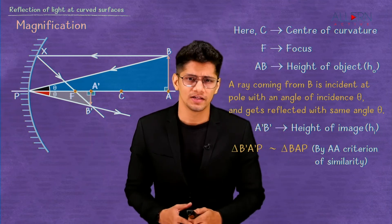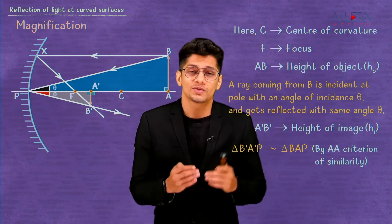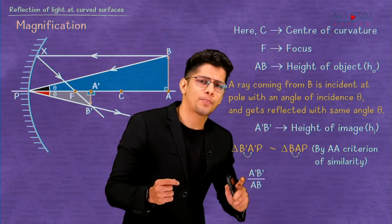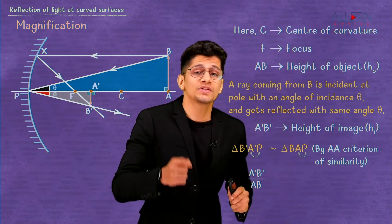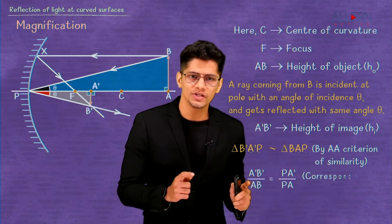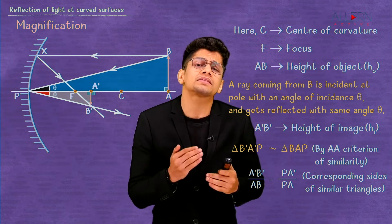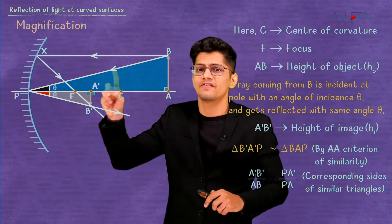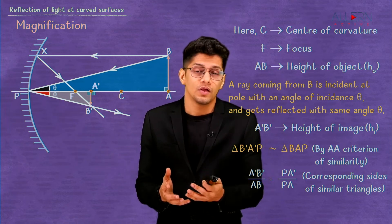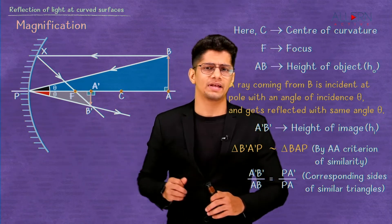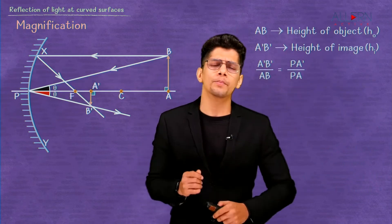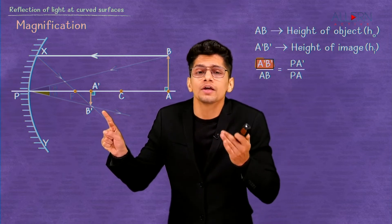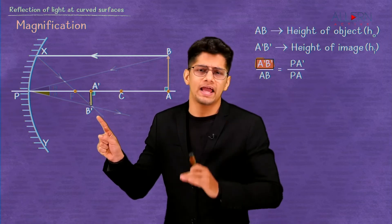When two triangles are similar, the ratios of their corresponding sides are equal. So we can write: A'B' upon AB = PA' upon PA. Here A'B' is the height of the image h subscript i, and we do not need the third ratio B'P upon BP as it has no direct relation to the object distance or image distance.